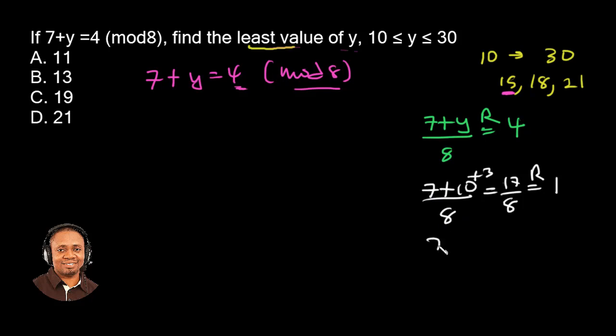So 13 plus 7 divided by 8, 13 plus 7 is 20. 20 divided by 8 is worth, it's going to give us 2 remainder, because we are only concerned about the remainder, the residue, 4. So the value of Y that we are looking at is 13. Good. So the answer option B is the right answer.